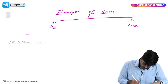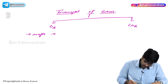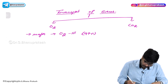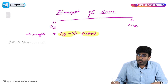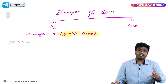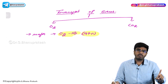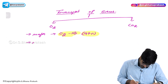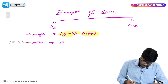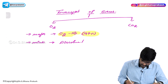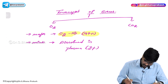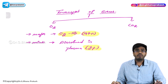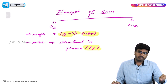Oxygen is mainly transported in which form? 97 percent of oxygen is transported in the form of oxyhemoglobin — oxygen is bound to hemoglobin. This is called oxyhemoglobin, and most of the oxygen in your blood is bound to hemoglobin in your RBCs. A very little amount — 3 percent — of oxygen is dissolved in plasma and travels in the blood in a dissolved state.